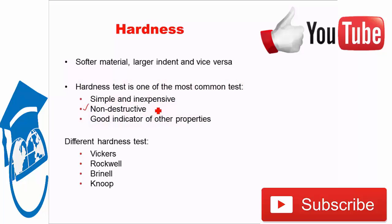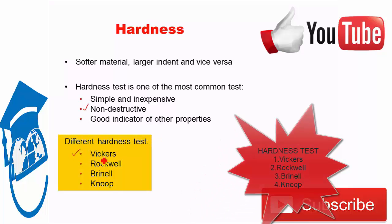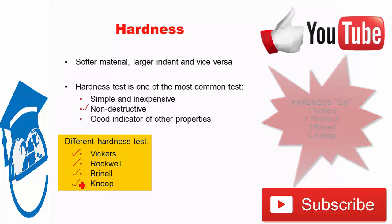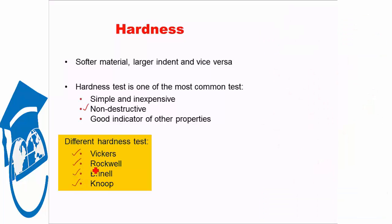Now hardness tests are mainly of four types. Different hardness tests are mainly of four types. One is known as Vickers hardness test, then we have Rockwell, Brinell, and Knoop. We will see each of them in details. What is the differences between them? Under what condition which hardness test is used? Let us see that.